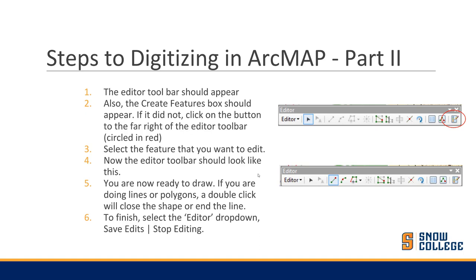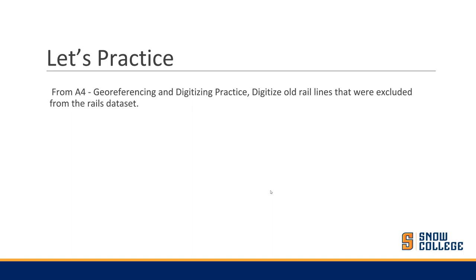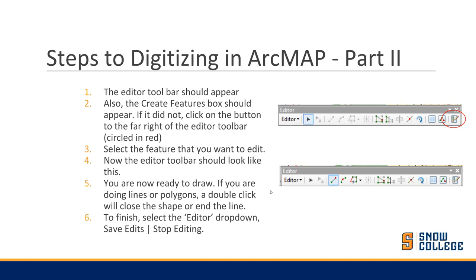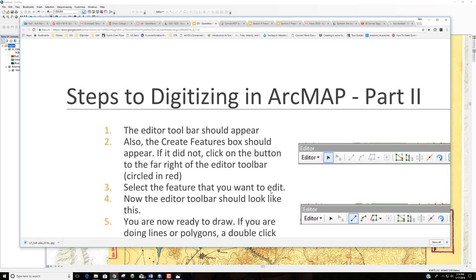Here are the steps to digitize in ArcMap. First, make sure the editor toolbar is visible. The Create Features box should appear — if not, click the button on the far right of the editor toolbar. Select the feature you want to edit from the Create Features panel on the right. From the editor toolbar, choose the draw button to begin drawing onto the map. When finished, save your edits and stop editing.